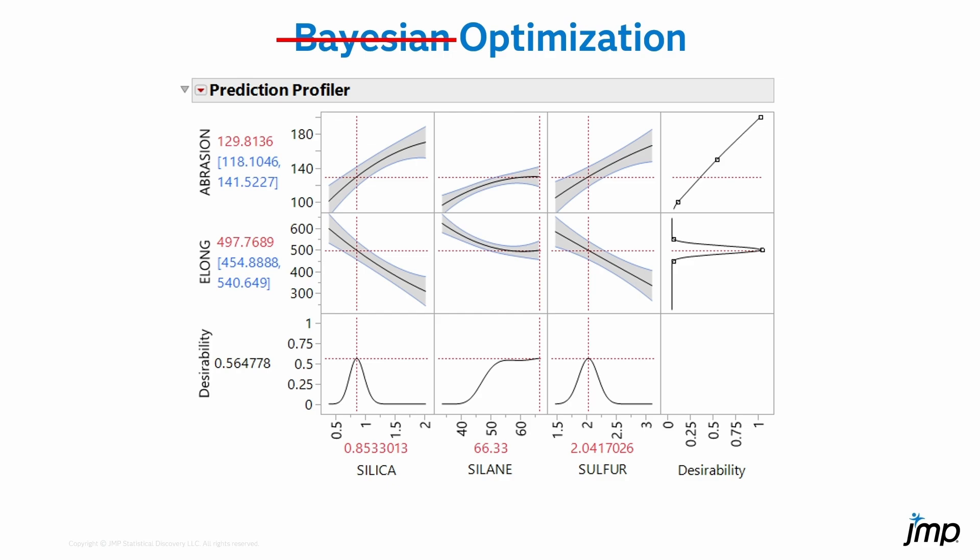Wouldn't it be faster if we could use the profiler earlier in that process — having it make use of all the information in the data as well as our project goals early on, when we have as few as maybe two data points, and have the profiler recommend combinations to try next that simultaneously improve model fit while driving us towards our solution?